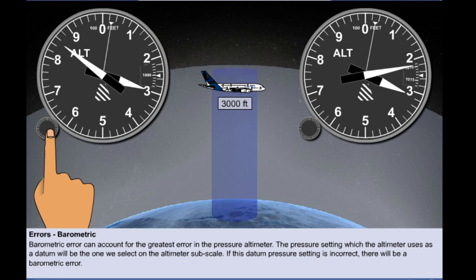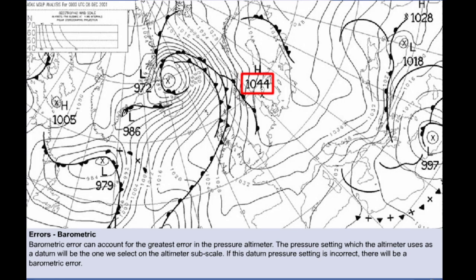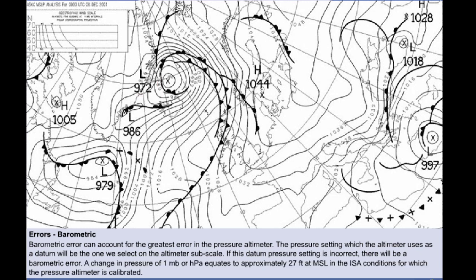Why should the datum pressure that we set on the altimeter subscale ever become incorrect? The simple answer is that the local surface pressure is constantly changing. We can see on this chart that the local surface pressure ranges from a high of 1044 to a lowest of 972. In addition the pressures will be constantly changing throughout the day, and a change in pressure of even one hectopascal equates to approximately 27 feet at mean sea level in ISA conditions. So if our altimeter subscale is not reset accordingly there will be a barometric error.